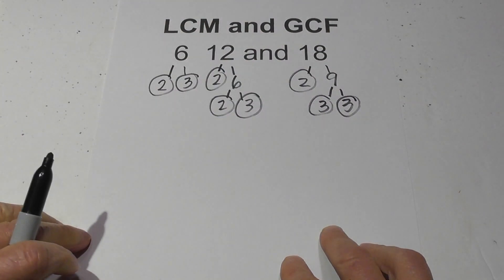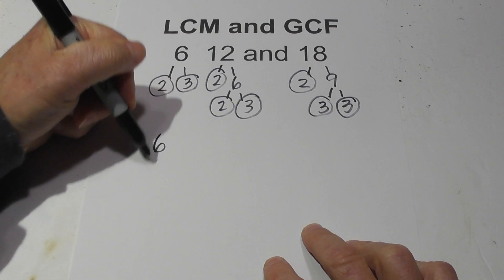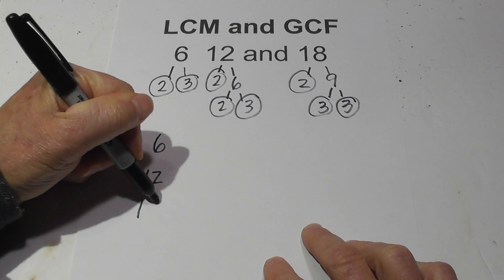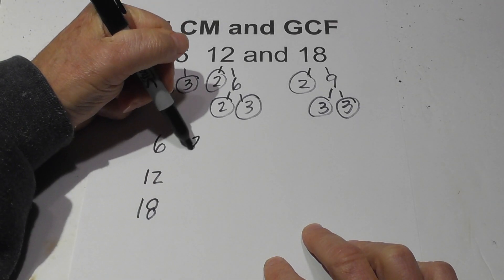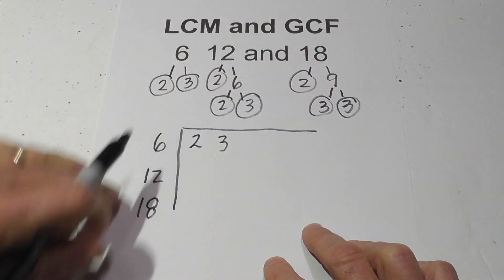Now what I do is I create a chart and I'll go 6, 12, 18, and what I do is write their prime numbers down. 6 is 2 and 3, let me draw it like this so it'll separate.